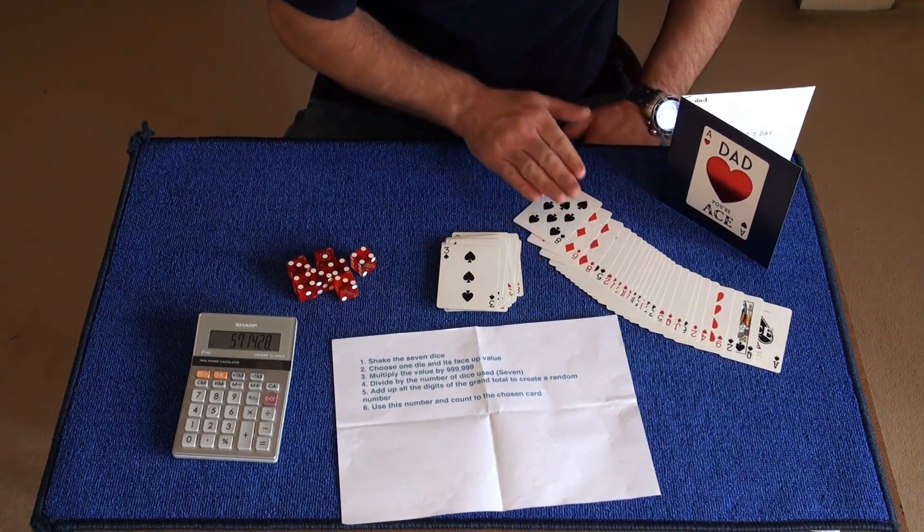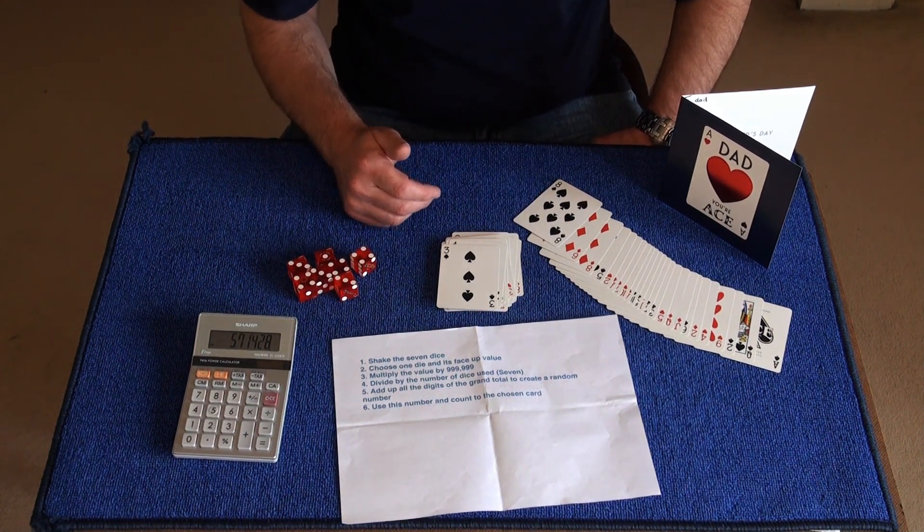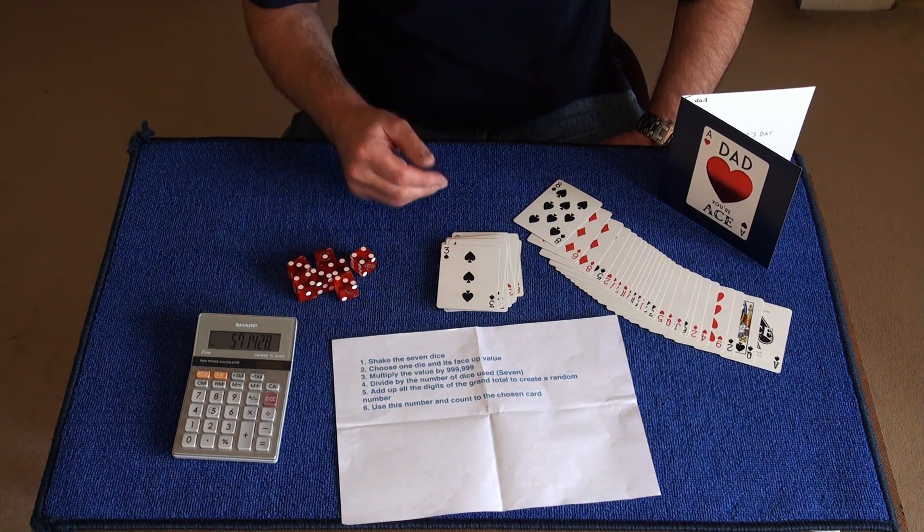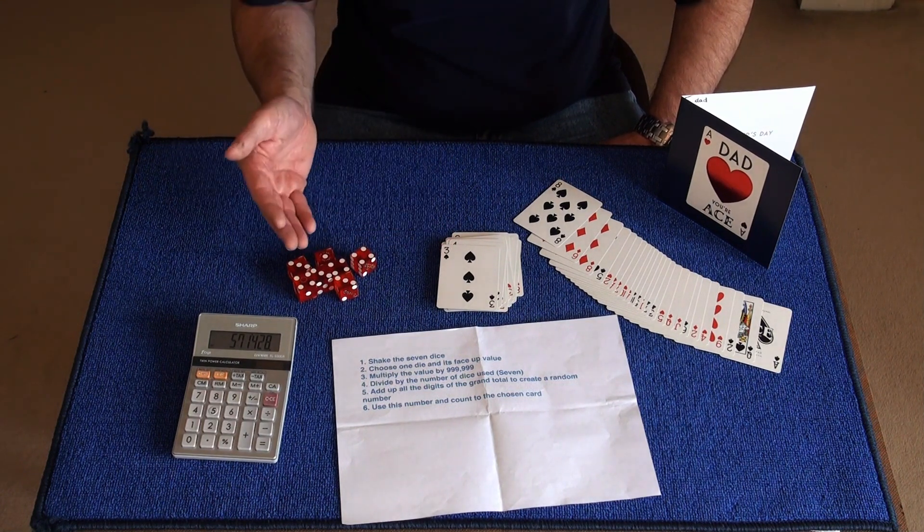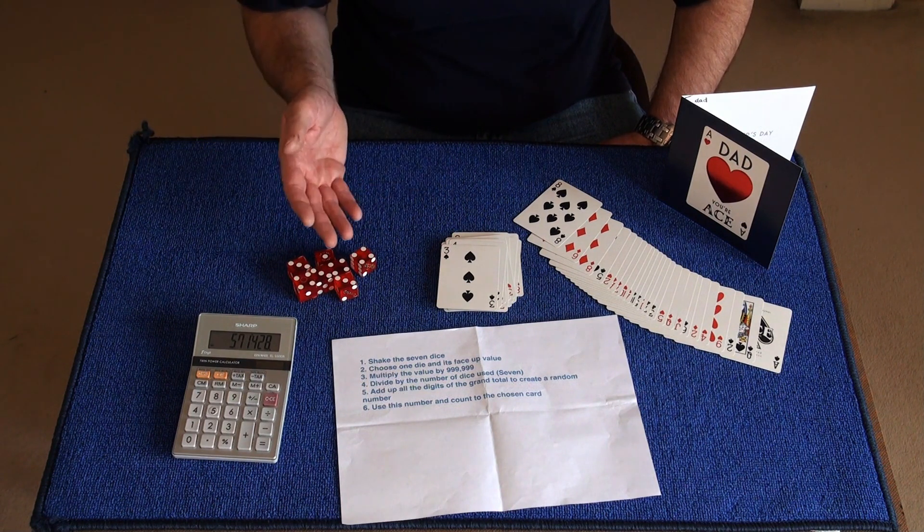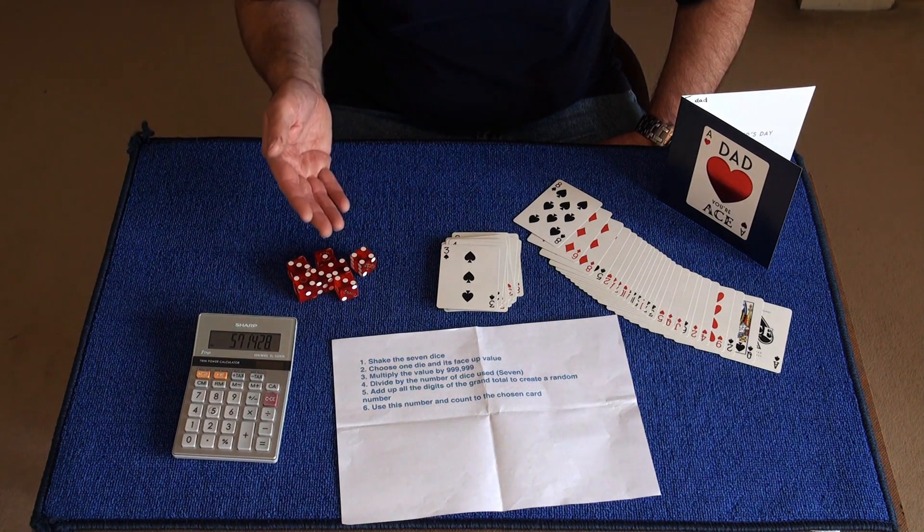Now I really like this trick, and what's good about this trick is you can do it with a borrowed deck. You don't really need dice. They can think of a number in their head, and then they can imagine rolling seven dice and picking a number.